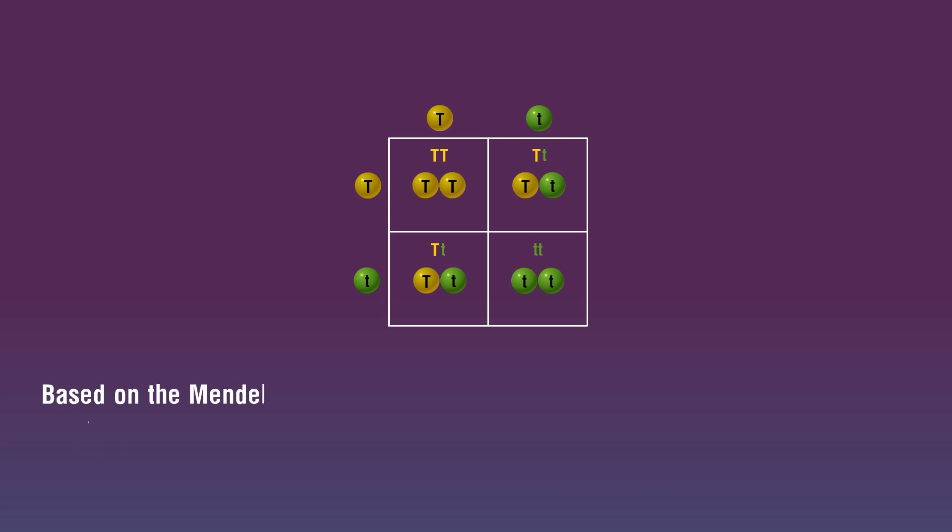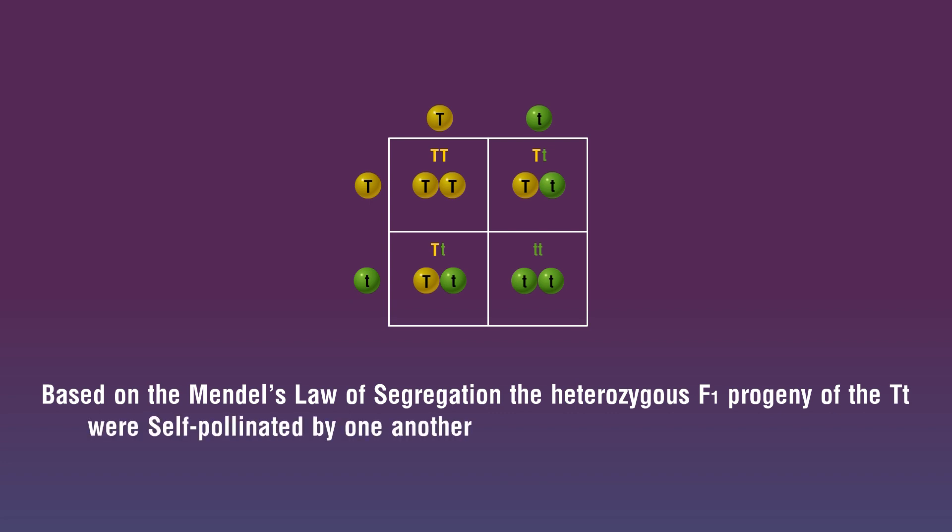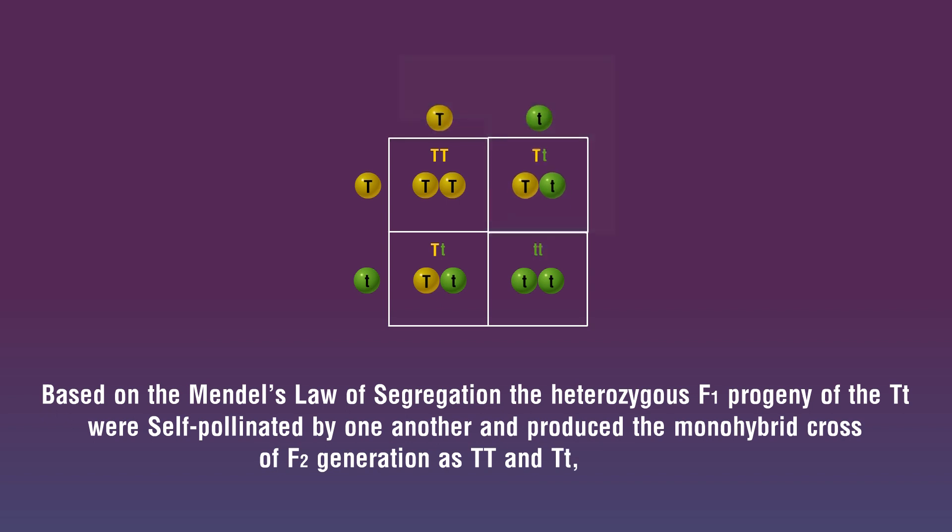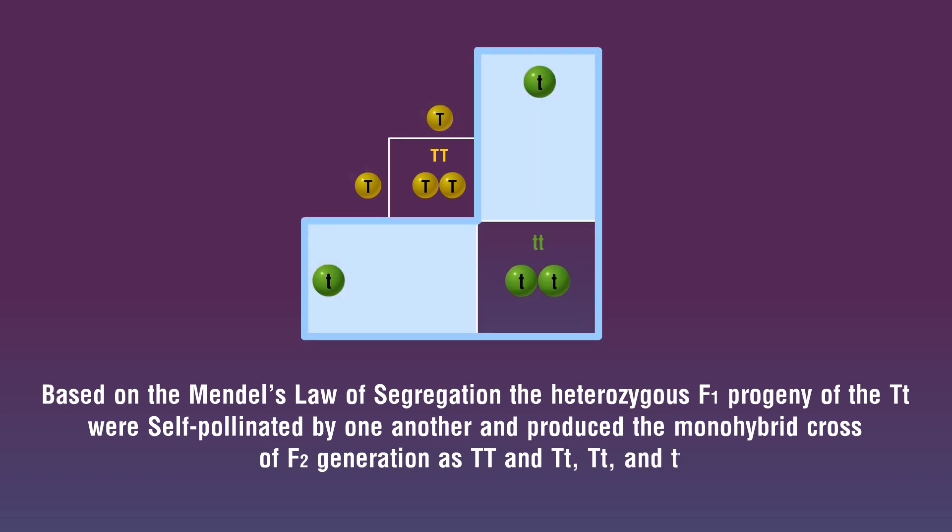Based on Mendel's law of segregation, the heterozygous F1 progeny of Tt were self-pollinated by one another and produced the monohybrid cross of F2 generation as TT and Tt, Tt and tt.